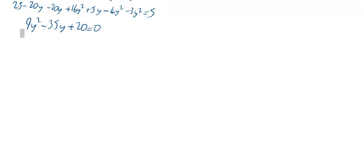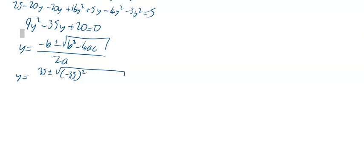Here y is equal to, and remember it is minus b plus or minus the square root of b squared minus 4ac all divided by 2a. So in this case your b is minus 35, so minus b will be 35 plus or minus, and we've talked about this one in previous videos, minus 35 is your b, so put that in brackets minus 35, then minus 4 times my a which is 9 times my c which is 20.